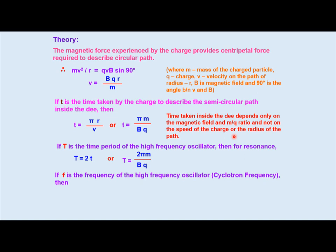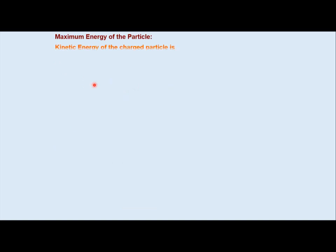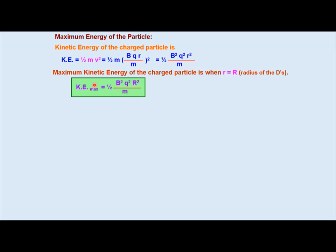If f is the frequency of the high frequency oscillator, then f = 1/T = Bq/2πm. For calculating the energy, kinetic energy of the charged particle is K.E. = ½mv² = ½m(BqR/m)² = ½B²q²R²/m. Maximum kinetic energy of a charged particle is when r = R (radius of the D's). Maximum kinetic energy K.E.max = ½B²q²R²/m where R is the radius of the D's.